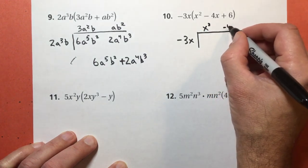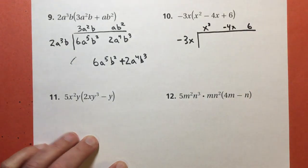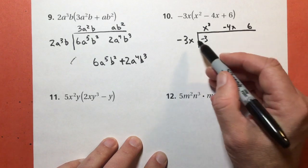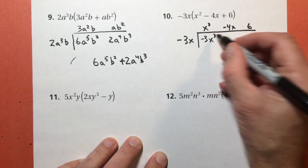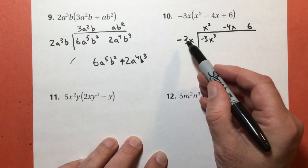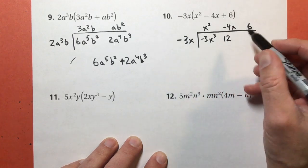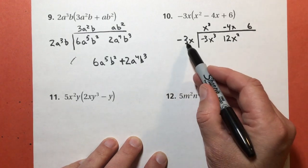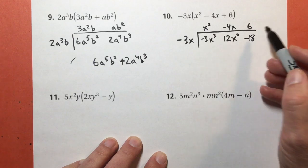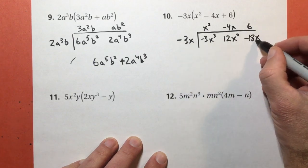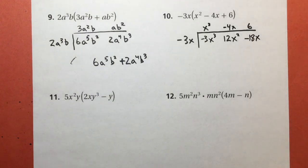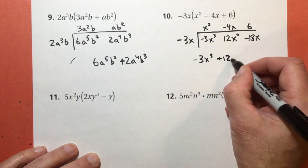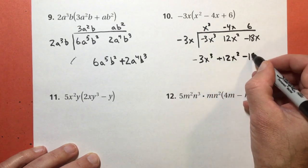So I'm setting up my multiplication chart, or my table, if you want to use that. Negative 3 times 1 is negative 3. x times x to the second power is x to the third power. Negative 3 times negative 4 is positive 12. And x times x is x to the second power. And negative 3 times 6 is negative 18. There's no x's here, so that x doesn't get multiplied by any of its cousins. So I get negative 3x to the third plus 12x to the second subtract 18x.